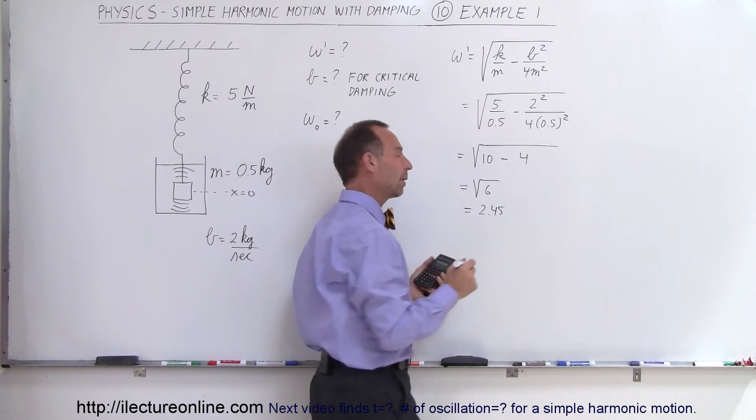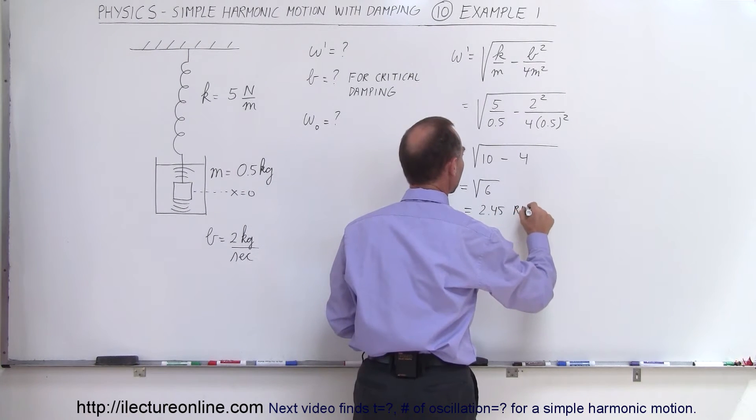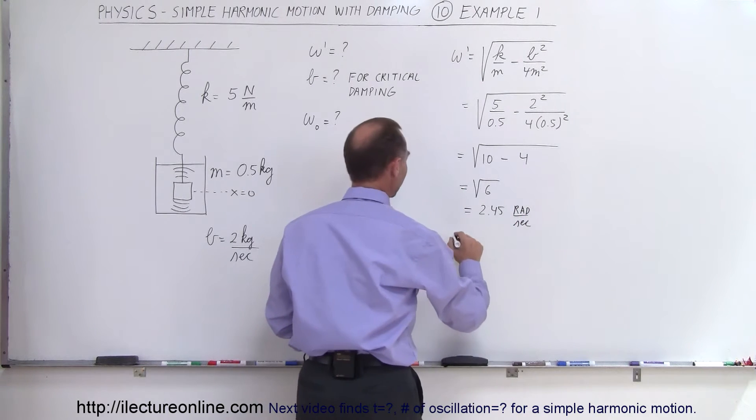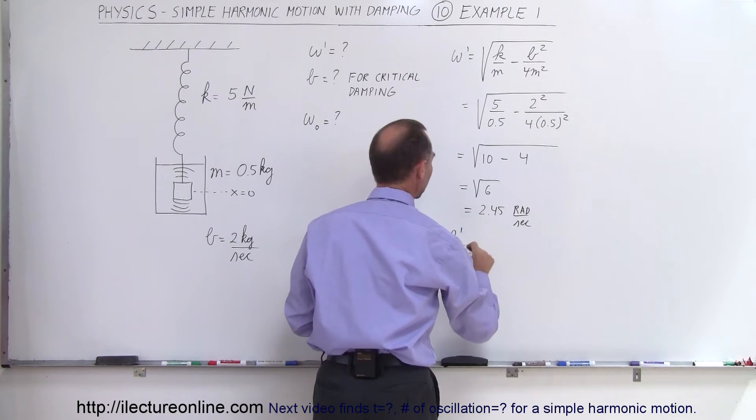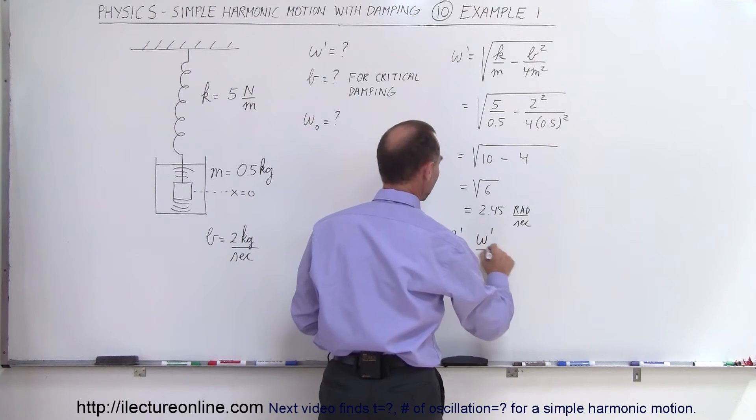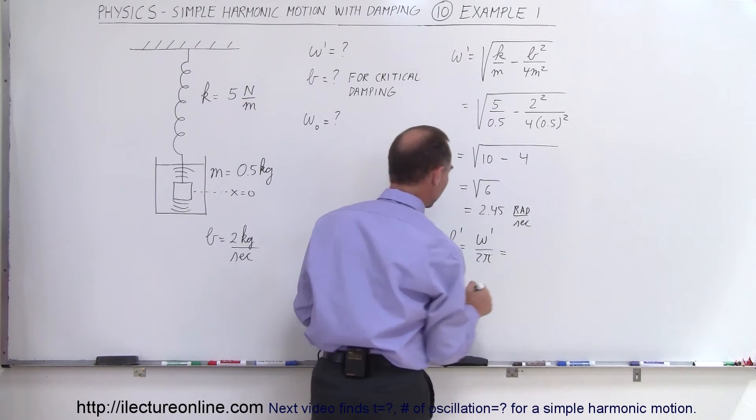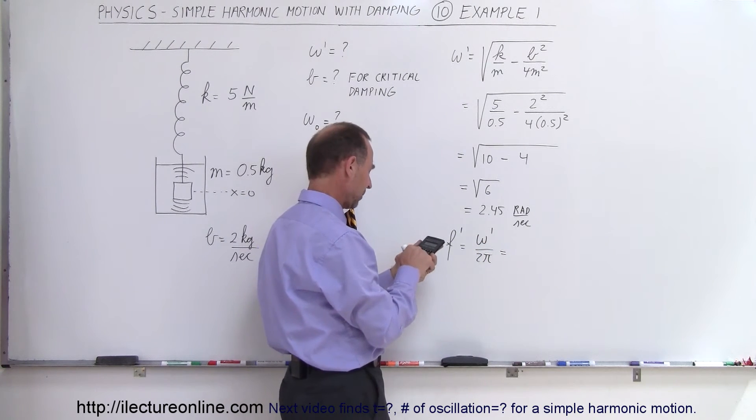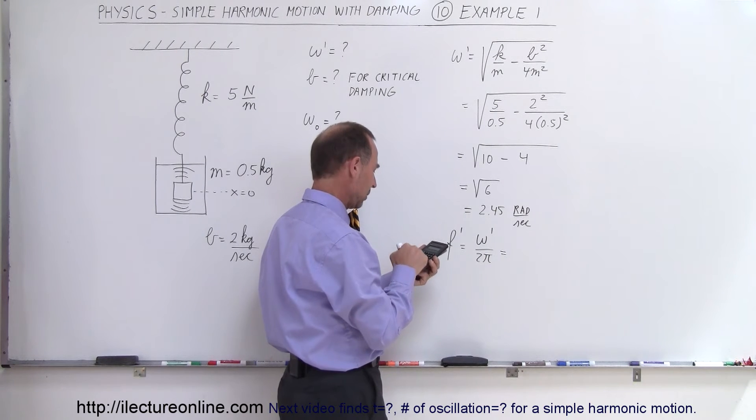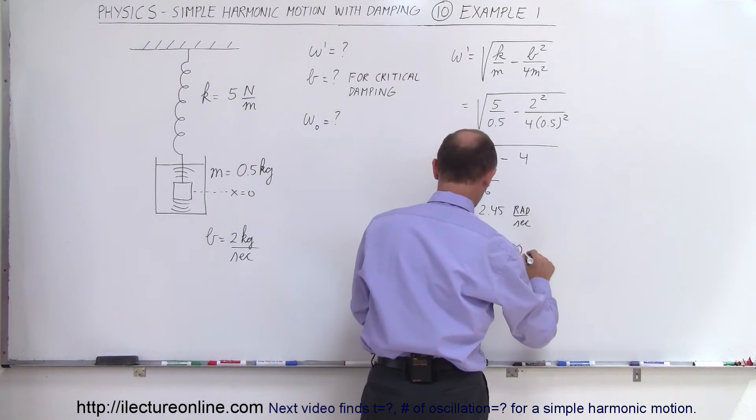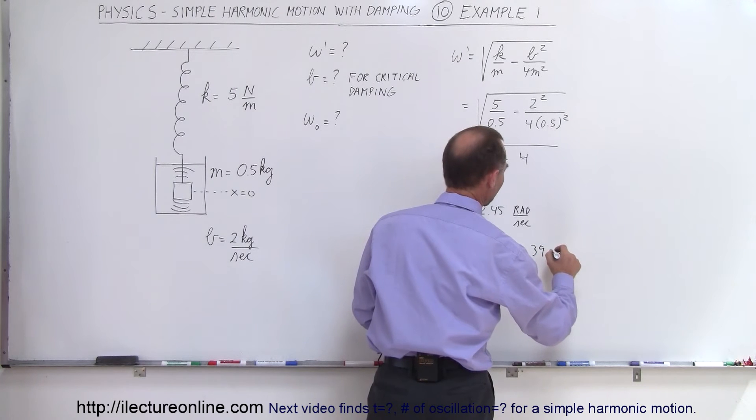2.45, that would be radians per second, not actually hertz but it would be radians per second. And then of course if you want the frequency associated with that, that would be equal to omega prime divided by 2 pi, which is equal to 2.45 divided by 2 divided by pi, which is equal to 0.39 oscillations per second, so that would be hertz.